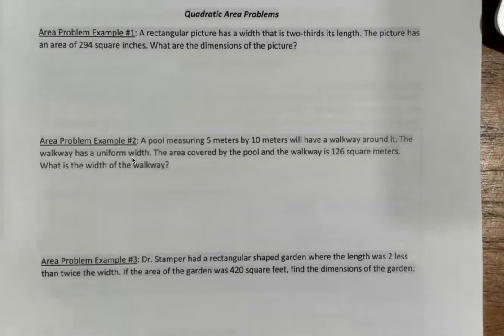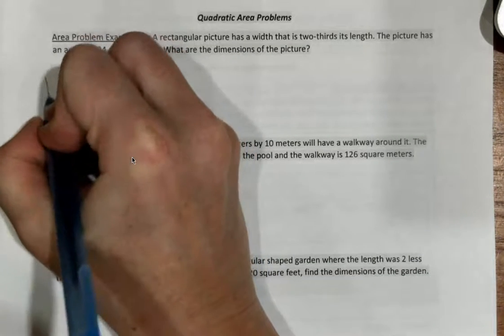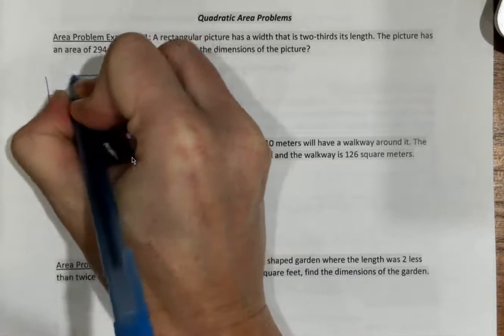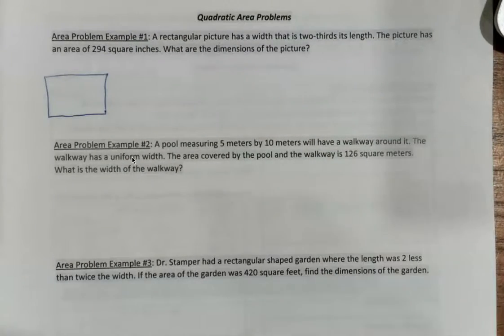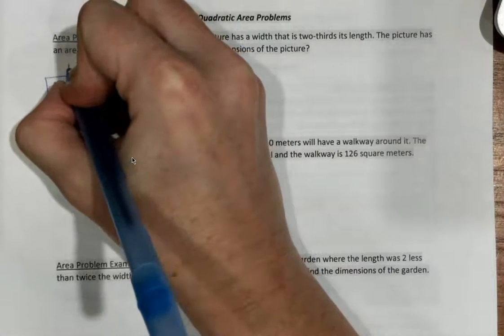Here we are. We've got five word problems. Hang with me. It won't be that bad. Example number one. A rectangular picture has a width that is two-thirds its length, and the picture has an area of 294 square inches. What are the dimensions of the picture? First thing I want you to do is draw the picture so we can start labeling it. That was supposed to be a rectangle. I'm not an artist.